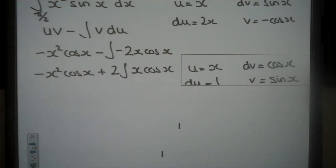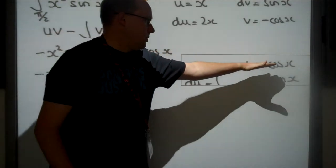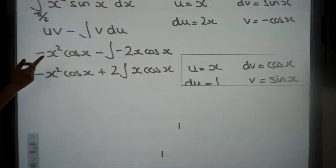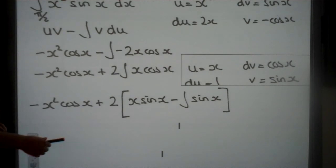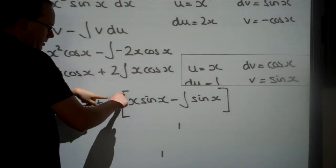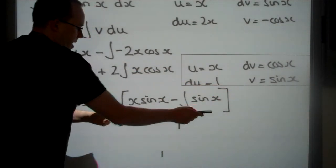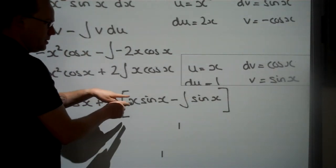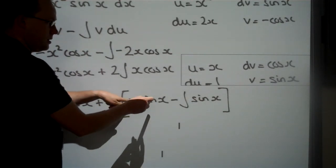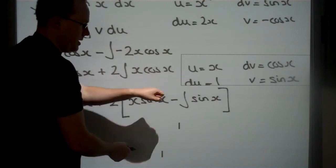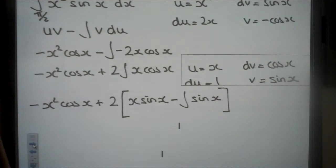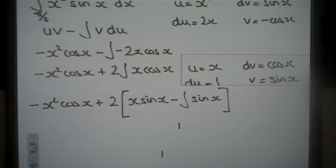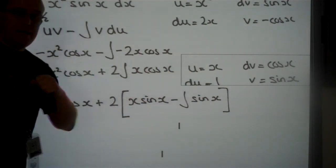So u equals x, dv equals cos x. Work out the differential of the first one and the integral of the second one. And then go ahead and substitute those into the formula. Now I'm being very careful how I'm writing my answer here. I've got to do 2 times all of this integral. So I've got 2 times and I've got my brackets here. So I've got uv, minus the integral of v, du. And as du is 1, sine x times 1 is just going to be sine x. But now I have an integral that I can work out.